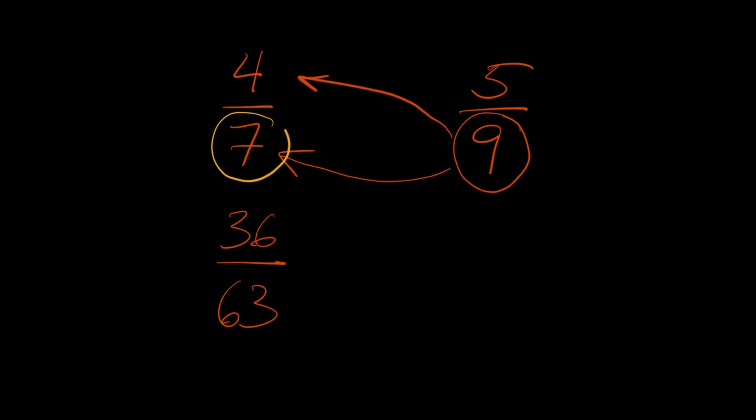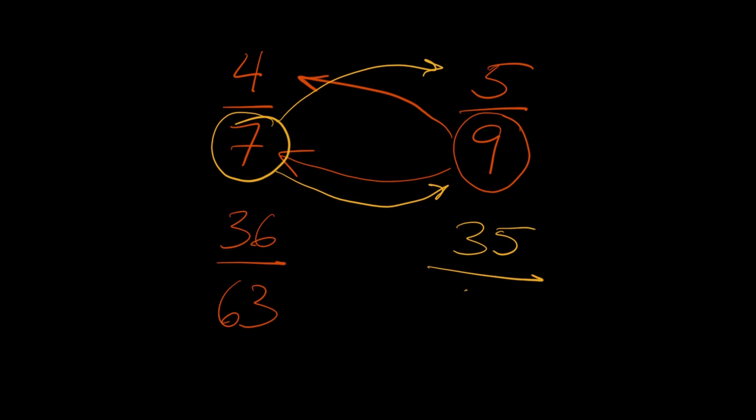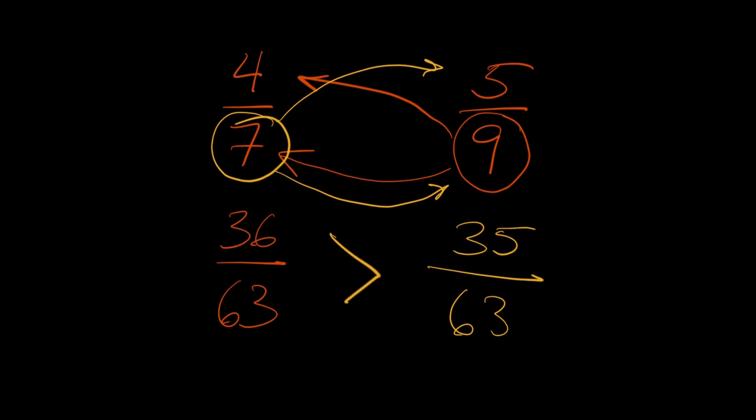Now focus on five ninths and multiply it times the denominator of the other fraction, which is seven. Seven times five is 35, and seven times nine is 63. And just like that, we have two equivalent fractions: 36 over 63 and 35 over 63. Both have the same denominator, and we can easily see that 36 is greater than 35, so the left fraction is greater than the right fraction.